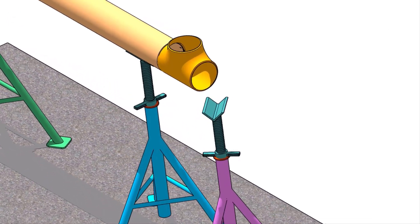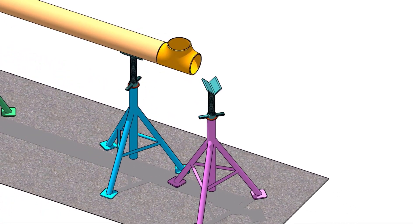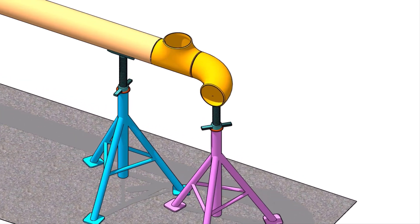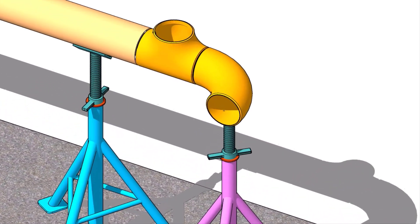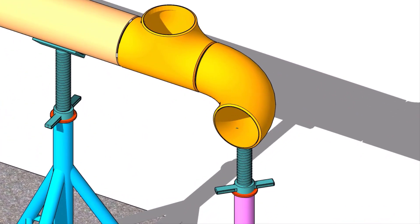Put an adjustable stand near the tee as shown. Put the elbow on the stand. Maintain the level. Put a gap rod in the joint and make sure the gap is equal all around.